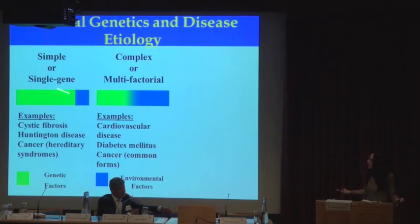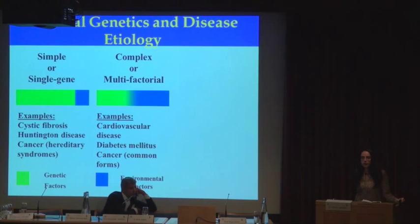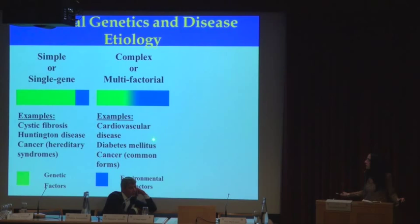Single-gene disorders are inherited conditions with a mutation in a gene which confers a very high risk of disease on the carriers of the mutation. Examples of single-gene disorders include cystic fibrosis, Huntington disease, and hereditary forms of many cancers. Multifactorial disorders are caused as the result of gene-environment interaction — they have many causal components, including several genetic and environmental factors. Examples of multifactorial conditions include cardiovascular disease, diabetes, and common forms of most cancers.